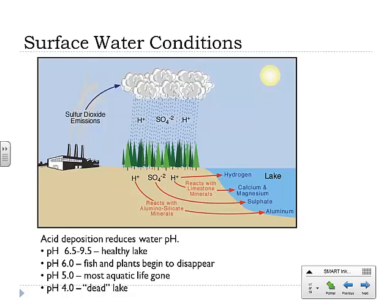Lastly, let's look at surface water conditions. This diagram is set up for sulfur dioxide, but you could imagine it for NO2 emissions from a car as well. When that acid deposits into water, it reduces water pH — the more acid added, the lower the pH gets. A healthy lake has a pH between 6.5 and 9.5. When pH goes below 6, fish and plants start to disappear. By pH 5, most aquatic life is lost, and by pH 4, you have a completely dead lake. The more acid rain that falls into our surface water, the harder it will be for life to survive in our lakes.